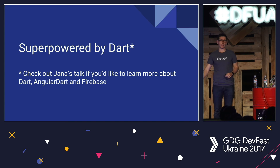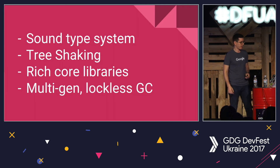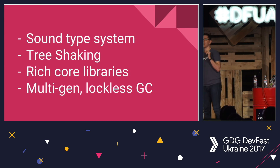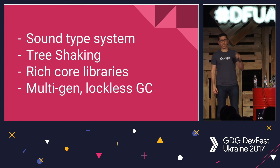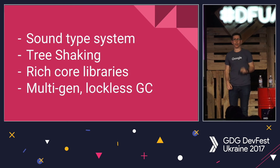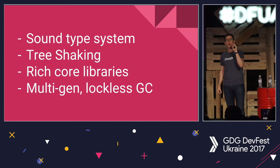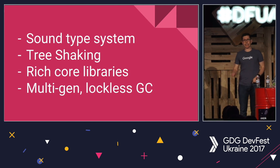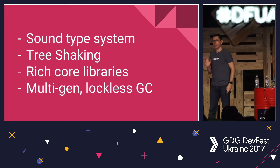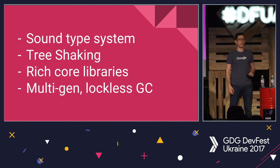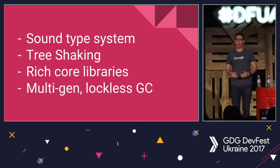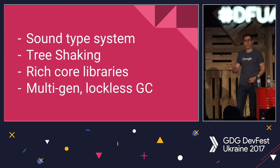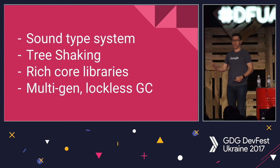Dart is a beautiful language that allows for a few simple things. It has a very sound type system. We have a tree-shaking compiler — instead of checking if code is not being used anymore, we go through code we know is being used and ask what else it uses, so we understand the optimal allocation. The core libraries of Dart are amazing — really rich and easy to use. And importantly for performance, we have a multi-generation lockless garbage collector, which is really important because we deal with a lot of small objects being allocated all the time as we scroll through a list. This ensures that the newest widgets get all the performance they require.